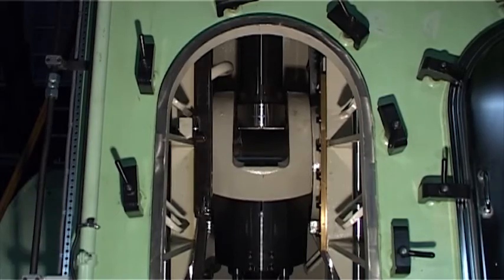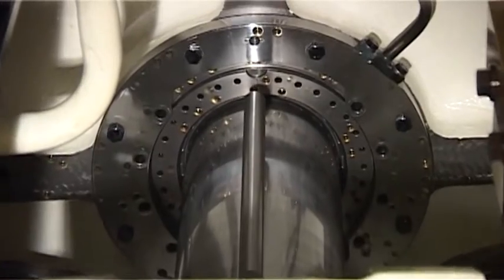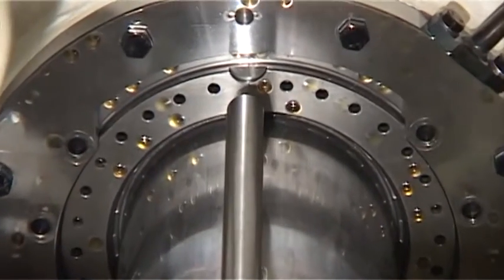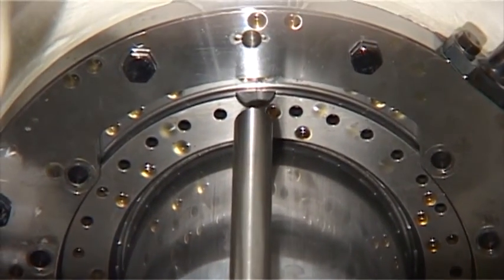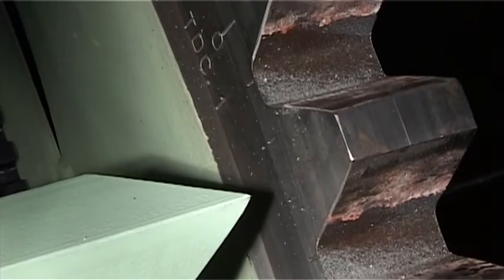Turn the crosshead towards top dead center while checking that the stuffing box lands correctly on the distance pieces. Turn to top dead center.